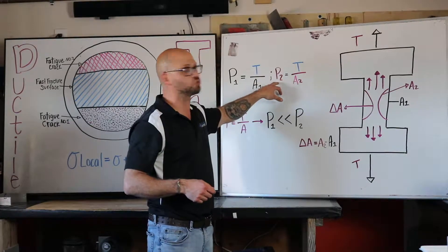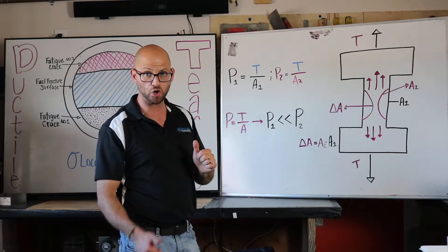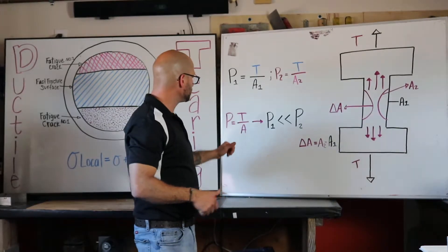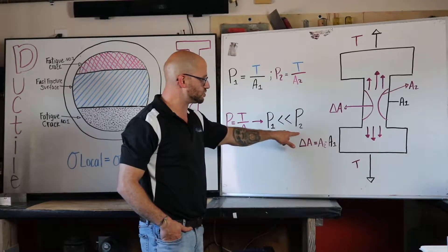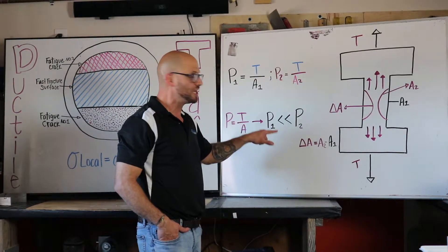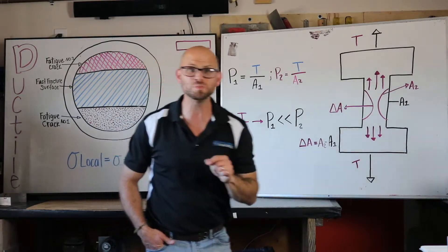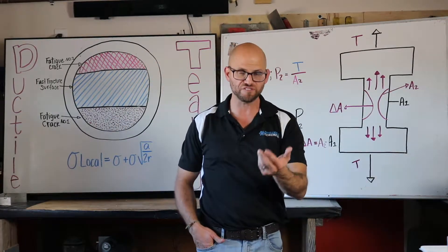that's going to drive our pressure or our stress up. So our T over A, as we go from one to two, two is going to be much larger than one and ultimately lead to that final failure.